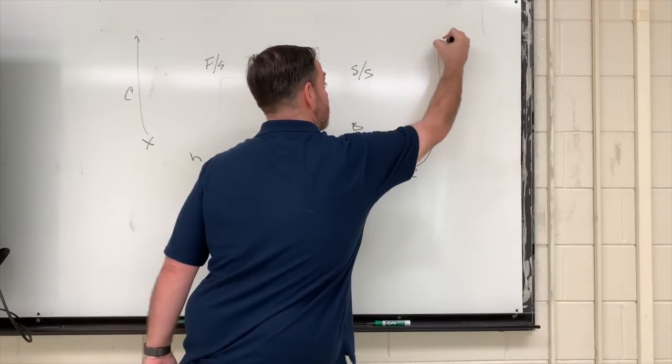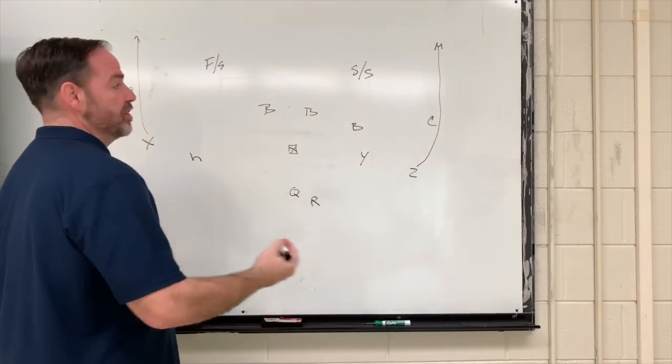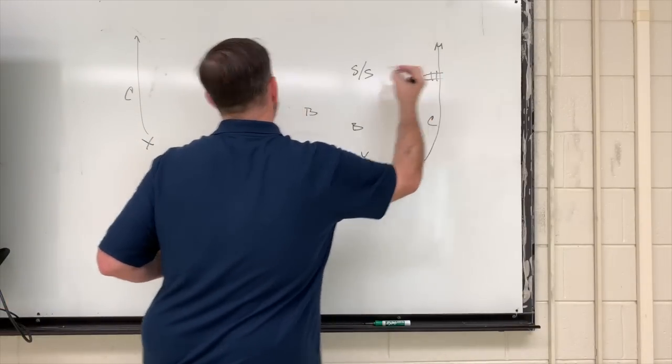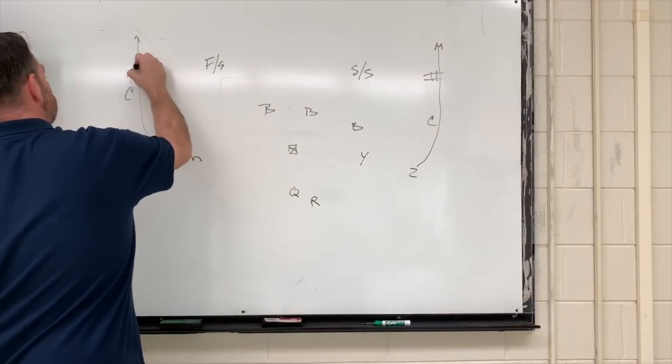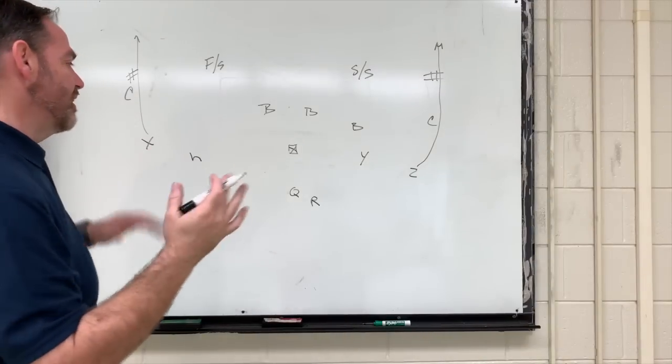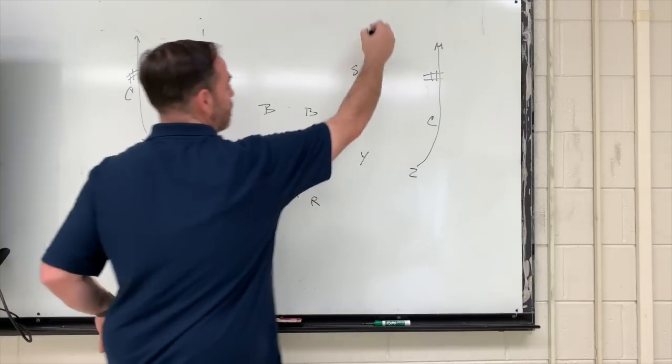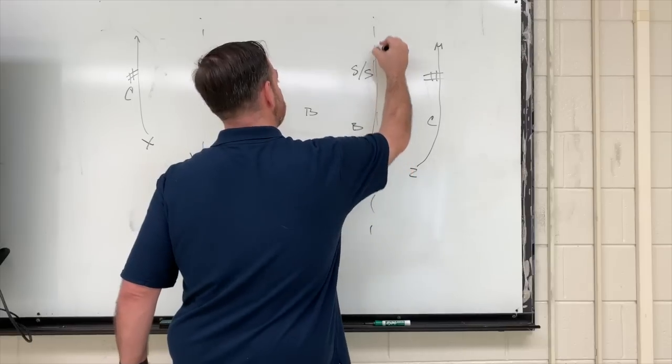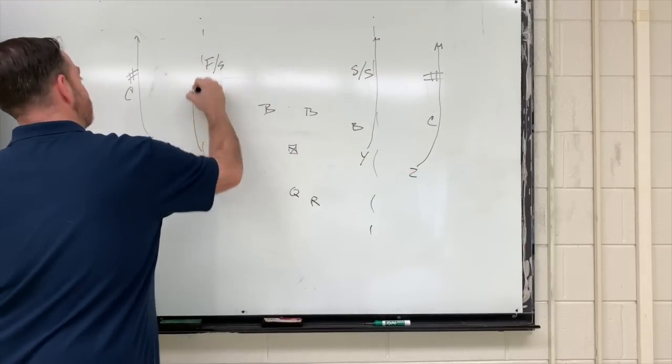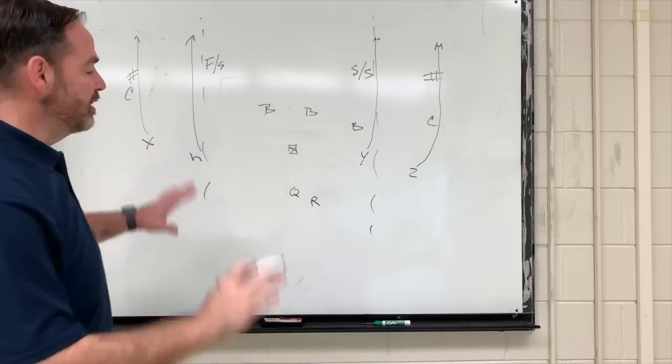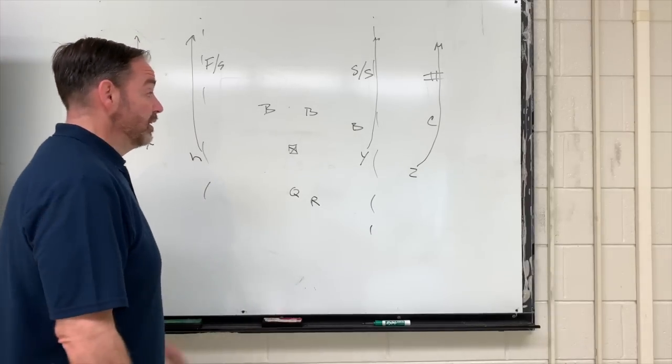But let's look at the four vertical concept. So the outside guys are going to outside release and get on their landmarks, which is the numbers. And the inside guys' landmarks is about a yard inside or outside the hash. Let's just say we're in the middle of the field. So we want him to get on the hash, and we want him to kind of be on the hash, too. You can play with it a little bit, however you want to do.